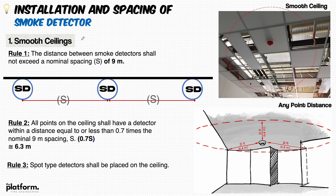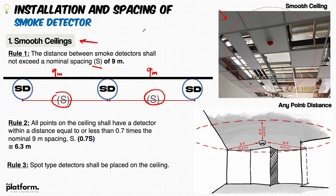Starting with the smooth ceiling — what is a smooth ceiling? In most areas, we have a full slab or ceiling as a normal standard condition, and that is considered smooth. Rule number one: the distance between smoke detectors shall not exceed a nominal spacing, referred to as S, of nine meters. When you refer to NFPA 72, you will find the distance is 9.1 meters, but in the UAE Fire Life Safety Code we fix it at nine meters.